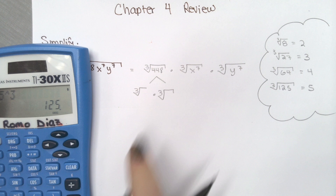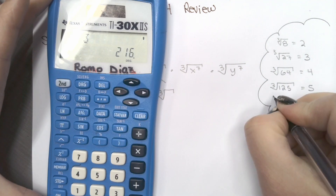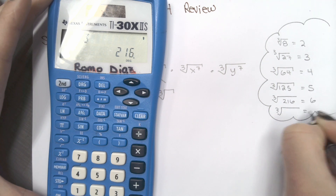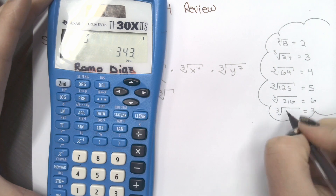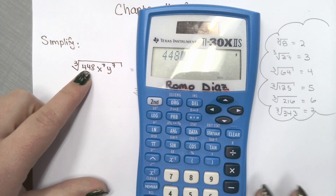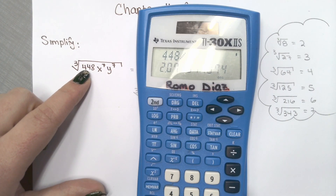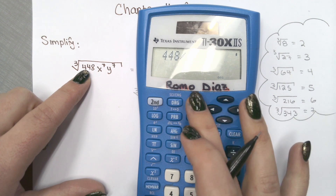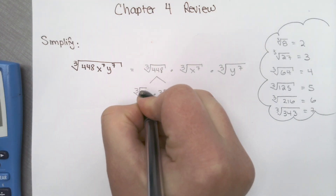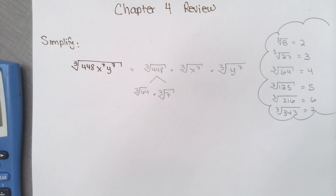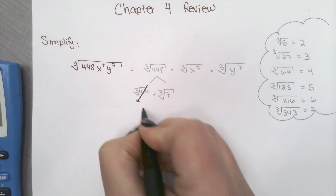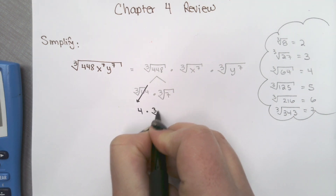The number we have is 448. I'm going to start out with 216 — that doesn't work. Then I'll go down to 64: 448 divided by 64 gives me 7. So we get 64 times 7. That's my two numbers. And we know that the cube root of 64 is 4, so we can simplify that. So we got 4 times the cube root of 7.